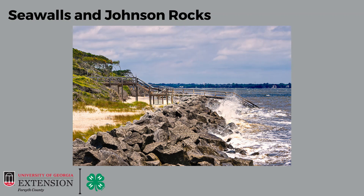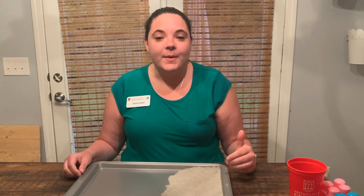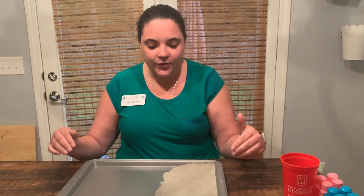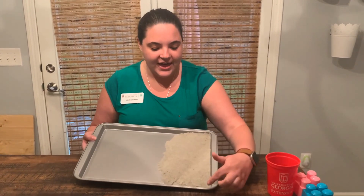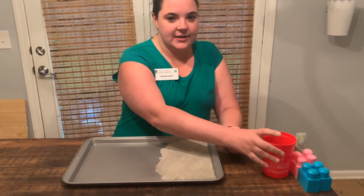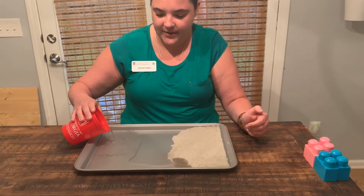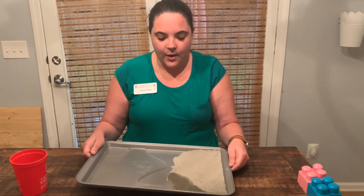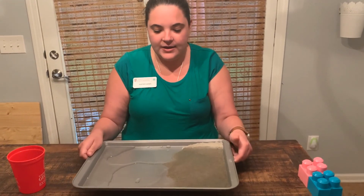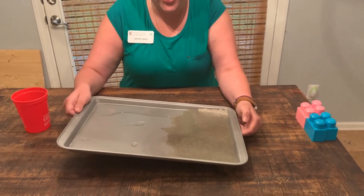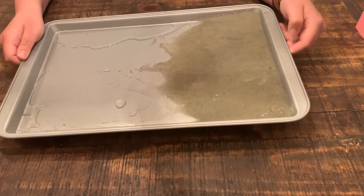Next, we're going to do a little experiment to look at how erosion affects our beaches and how water affects things like Johnson Rocks. Using a sheet tray as a beach and adding water to create waves, you can see the sand starting to move — causing beach erosion.